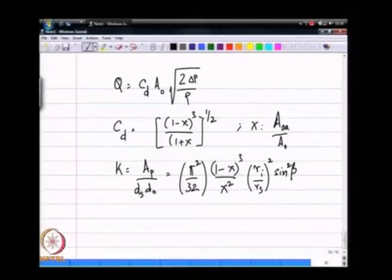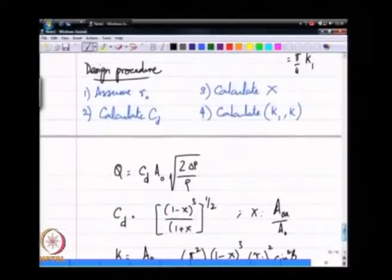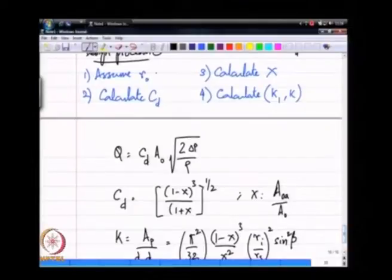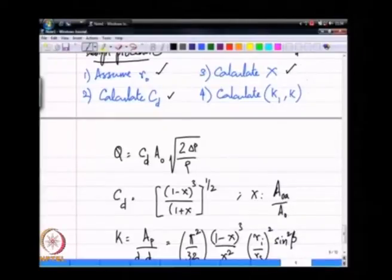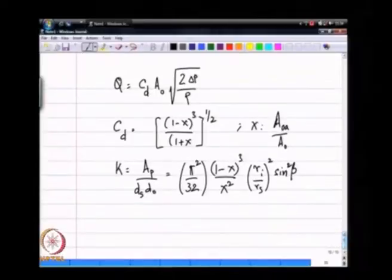For a given exit orifice diameter r0, if I assume r0, I can calculate CD and from the next expression I can calculate x and calculate K. Now I have some estimate of Ap relation between Ap, ds, and d0, I do not yet have unique values for those.